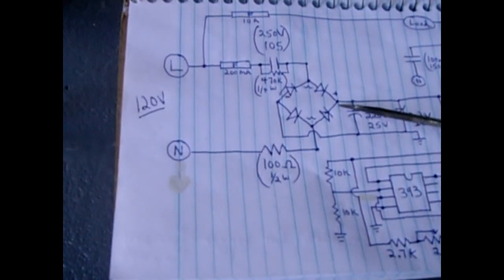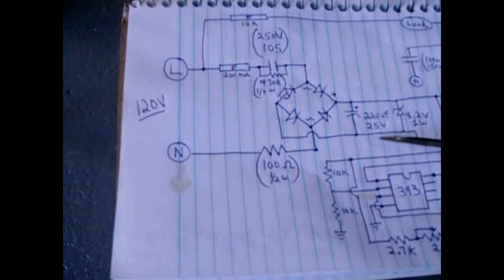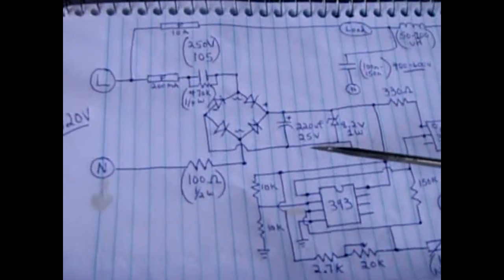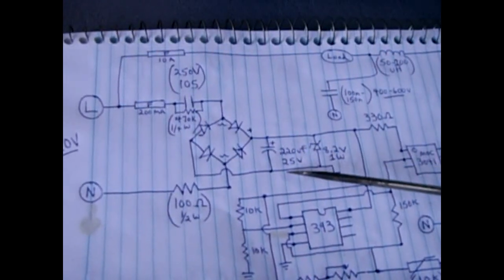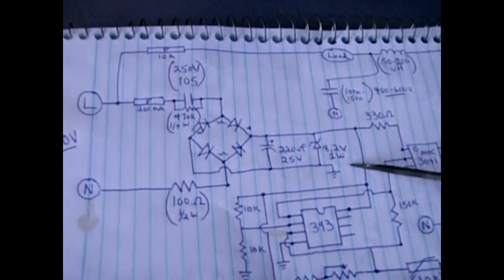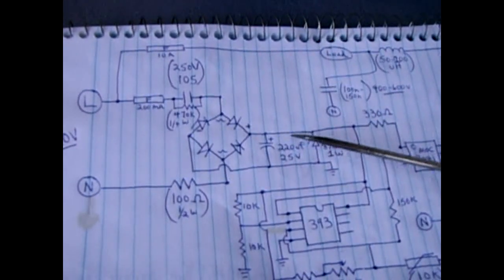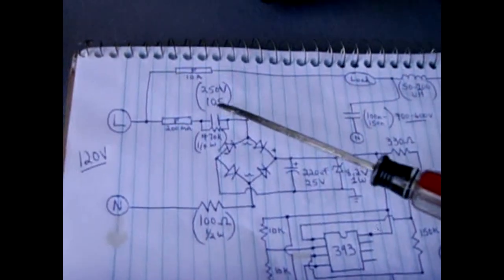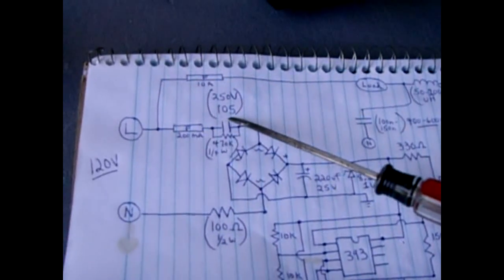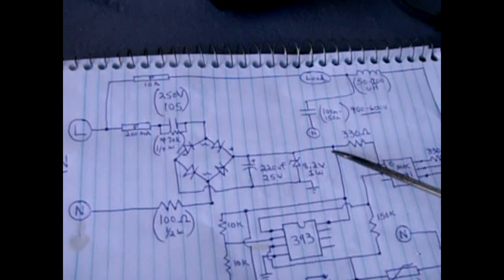When it leaves the other side of the bridge rectifier, it flows through a 100 ohm half-watt resistor and back to the neutral. The positive and negative output has a 220 microfarad 25 volt capacitor electrolytic across the output. After that you have an 8.2 volt 1 watt zener diode.